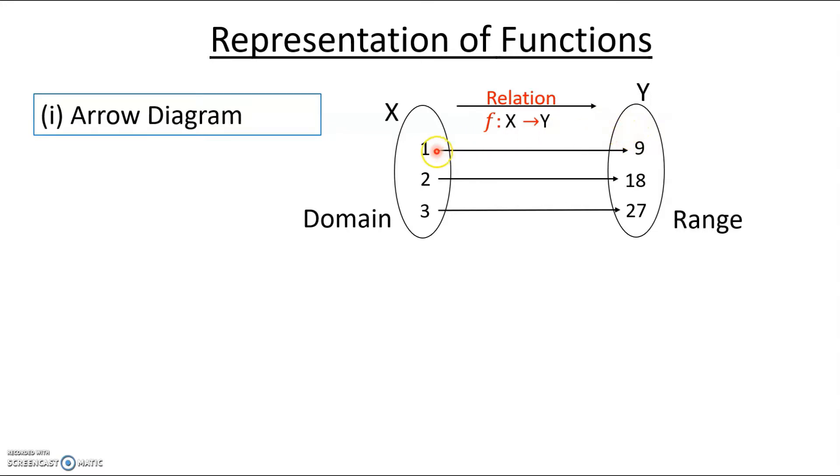When I say that 1 in x is related to 9 in y, 2 in x is related to 18 in y, 3 in x is related to 27 in y. This kind of mapping is called an arrow diagram and you call this x as the domain and this y as the range. The function is from x to y.